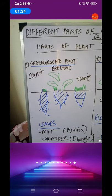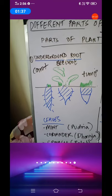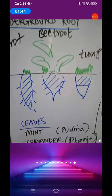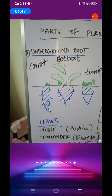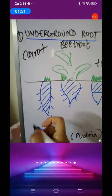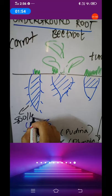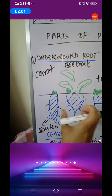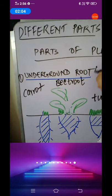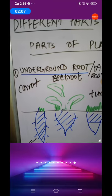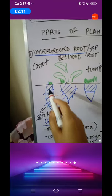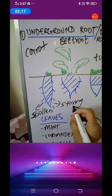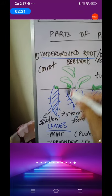Let's start with underground root. Why do I call it underground root and not simply root? Because root is anyway underground — we both know that. The reason I'm calling it underground root is because this root is swollen. The meaning of swollen is it is thick. These roots are also sometimes called tap roots. So why are they thick? They are thick because they are storing food.